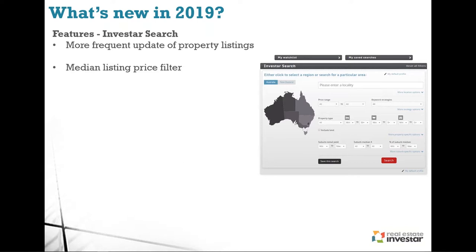We've added a median listing price filter — never had this before. You can quickly search to say: only show me properties in suburbs where the median listing price is under $500,000 — a good way to target more affordable suburbs. You can then apply the percentage-of-suburb-median filter. For renovations, if you want something at least 20% below the median, you'd find something around $400K–$380K, giving you an opportunity to renovate, get an uplift, and revalue around $500K to appeal to a bigger pool of buyers.